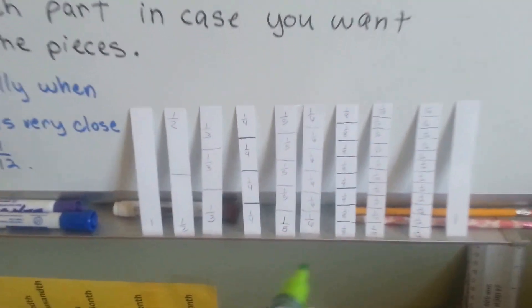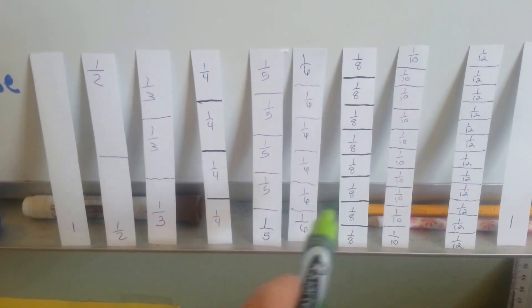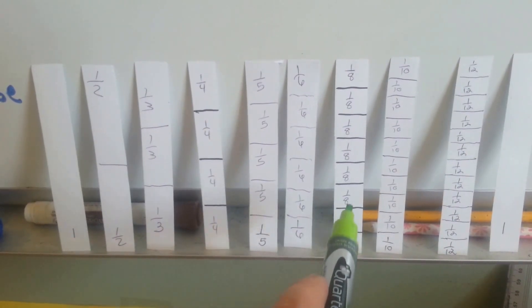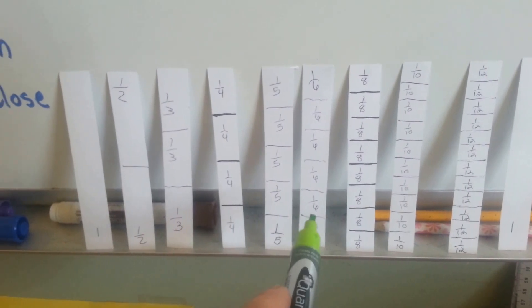Now, if you look, look at my 1 sixth model here, compared to my 1 eighth. See how sloppy that is? So, you don't want to do it like this. You want to do it nice and straight and pretty like this, or like this.